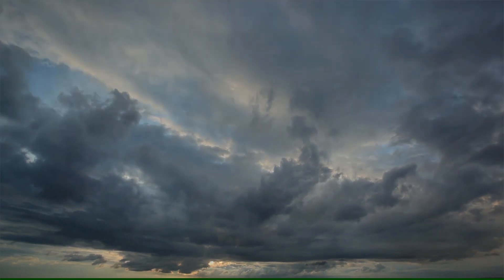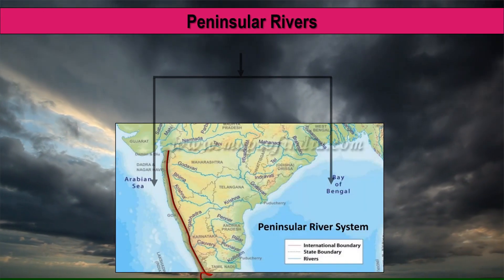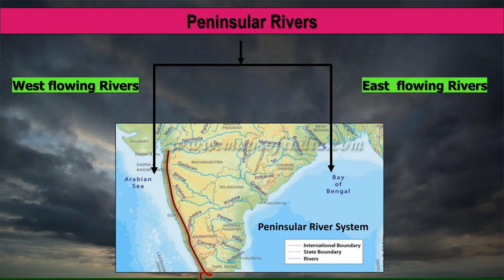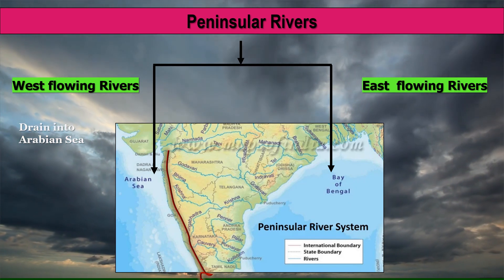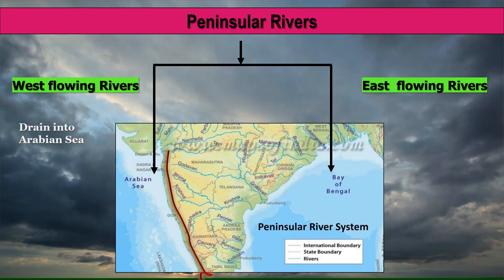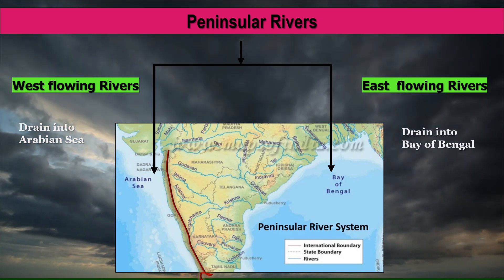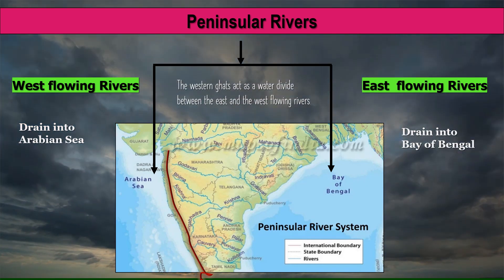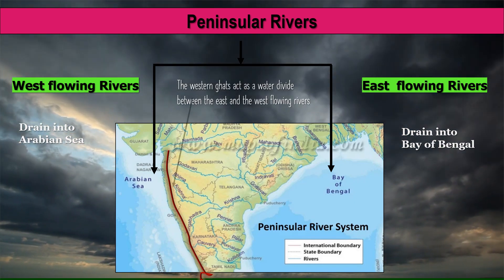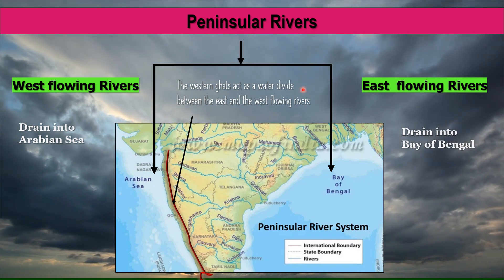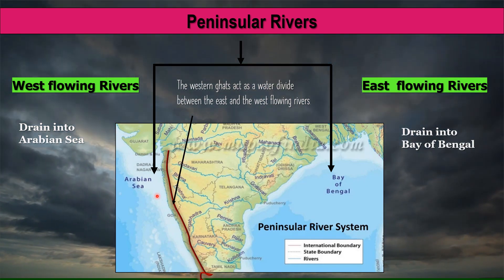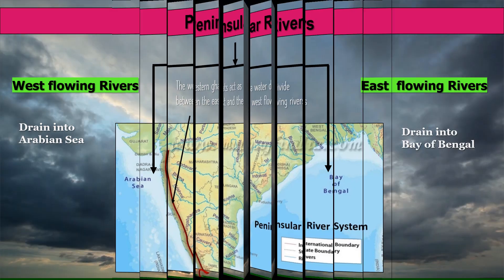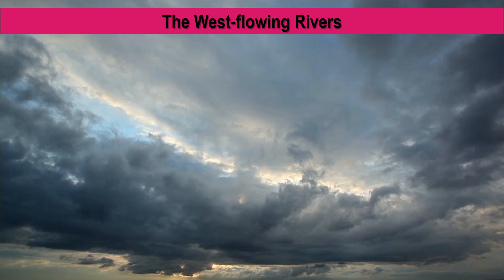We will now study the second category of rivers — the Peninsular Rivers — divided into two categories: the West Flowing Rivers and the East Flowing Rivers. The West Flowing Rivers drain into the Arabian Sea and the East Flowing Rivers drain into the Bay of Bengal. The Western Ghats act as a water divide between the East and West Flowing Rivers.